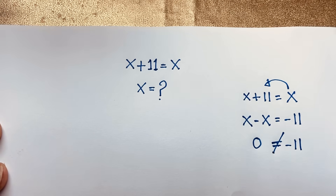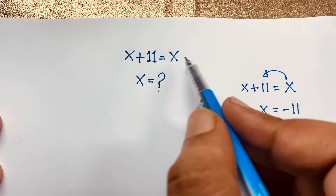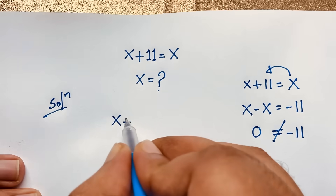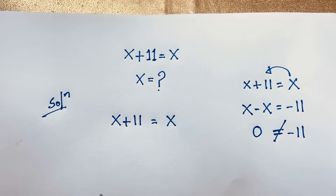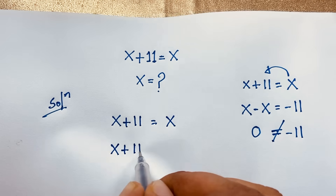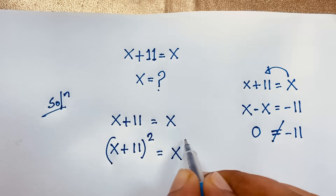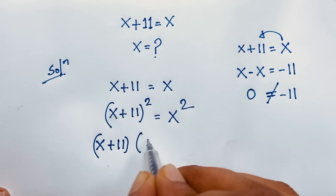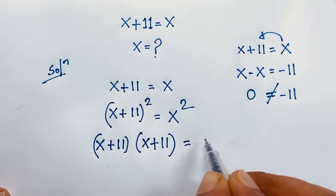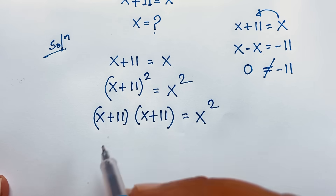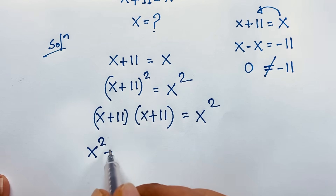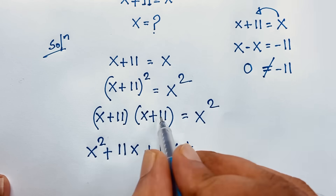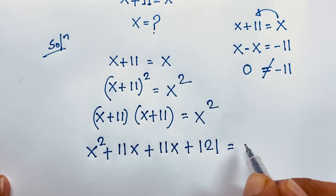But how to solve this interesting math question? If I use both sides whole square, so our question is x plus 11 is equal to x. I use both sides whole square, so x plus 11 whole to the power 2 is equal to x to the power 2. Now this is x plus 11 times x plus 11 is equal to x square. Now x times x is x square, plus x times 11 is 11x, plus 11 times 11 is 121, is equal to x square.